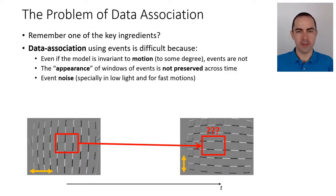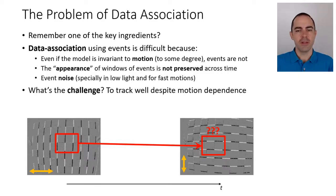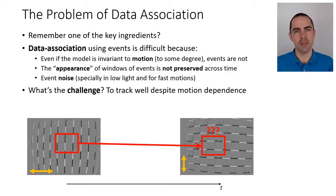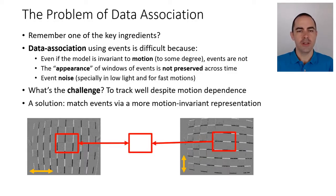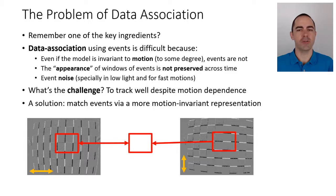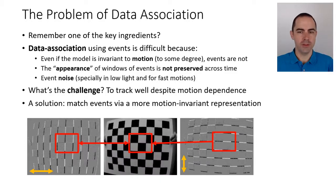On top of that, there is event noise, especially in low light conditions and for fast motions. The key challenge in tracking is how to track well despite all these nuisances — mostly the dependence on motion. A possible solution could be to match events via some intermediate motion-invariant representation.